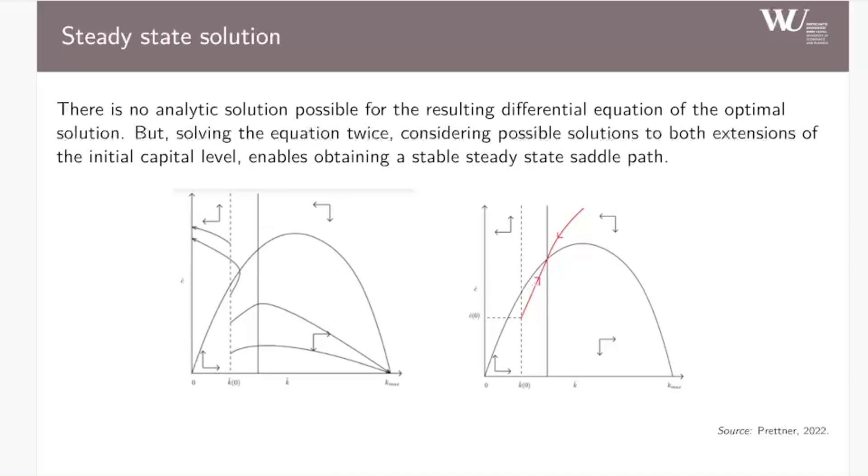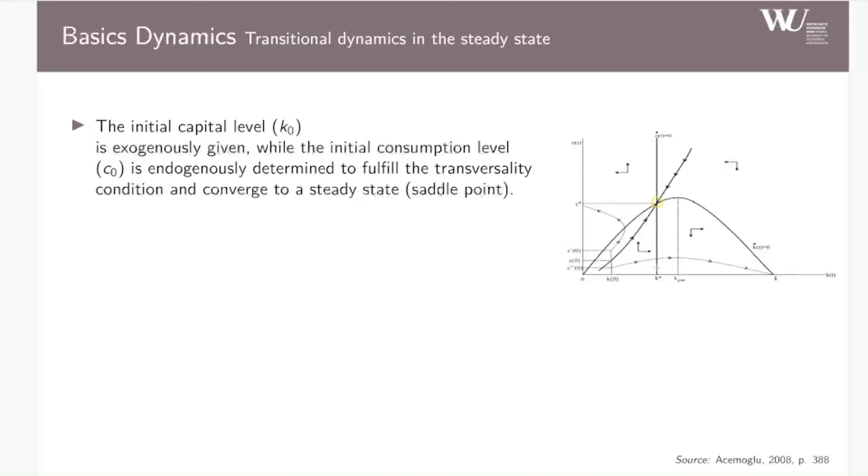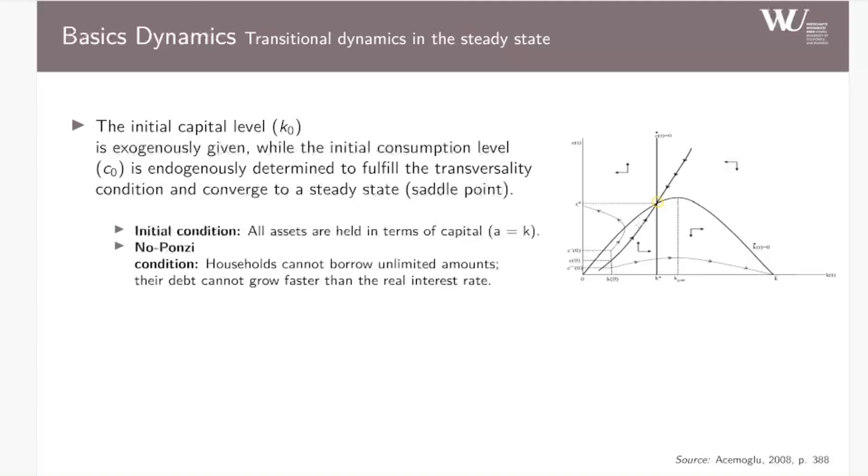To shortly summarize: the initial capital level is given and is exogenously given, while the initial consumption level then is endogenously determined, and in a way to fulfill the so-called transversality condition and to converge to this steady state. We have three assumptions. First, the initial condition that all assets are held in terms of capital. Then we have the no-Ponzi condition: households cannot borrow an unlimited amount of assets; the debt cannot grow faster than the real interest rate. Thirdly, the transversality condition, ensuring that in infinite-dimensional problems there are no beneficial simultaneous changes in an infinite number of choice variables.